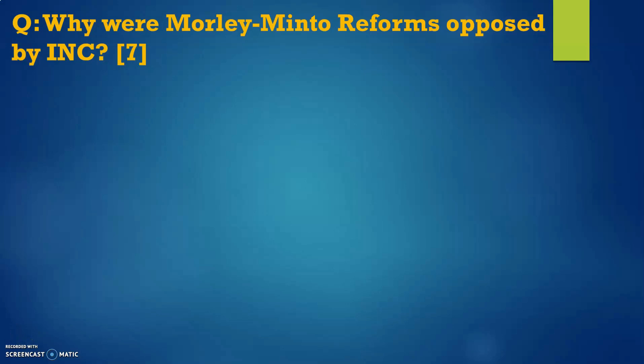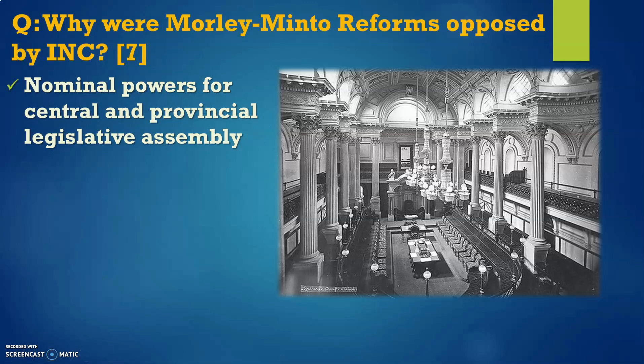For the first paragraph, the first thing to write is that the INC rejected these reforms because they were not given proper powers. The first point is related to the nominal powers given to the central as well as provincial legislative assemblies. The law-making powers given to Indians were very minimal and limited, which is why the INC was highly disappointed.